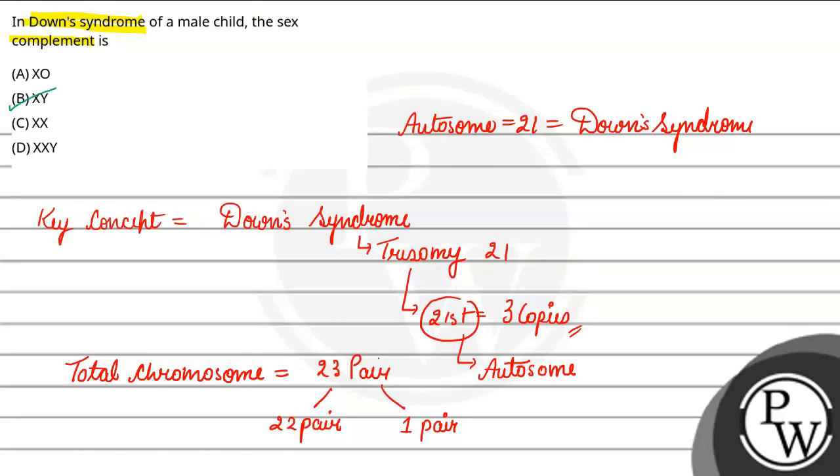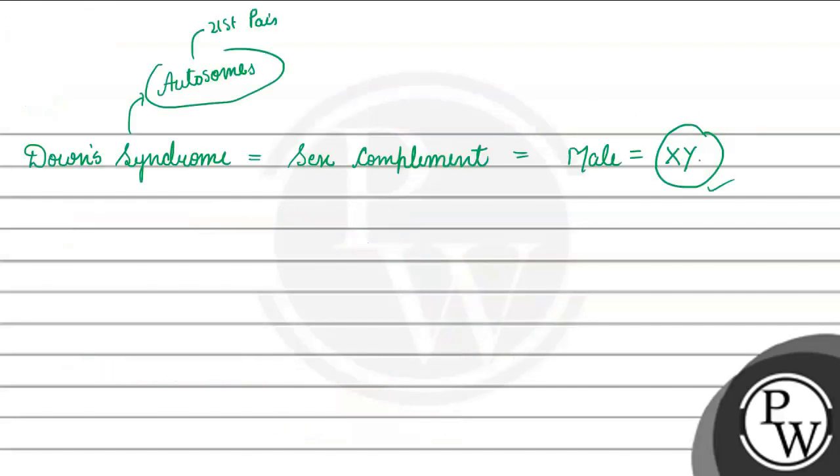Agar aap option A dekhoge, to option A mein kya likha hai? XO. Ye XO ka kya matlab hai? Ye O na khaali space hai aur ye aapko kab dekhne ko milta hai? Ye aapko Turner syndrome mein dekhne ko milta hai.